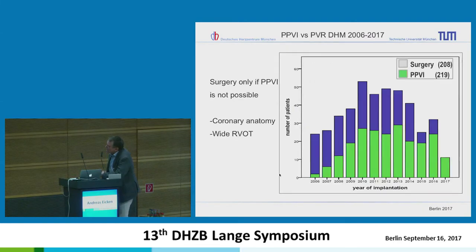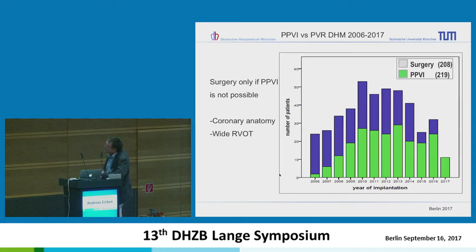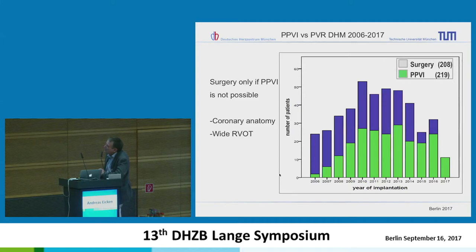Since we started our program in December 2006 with percutaneous valve implantation, we've looked at the same time at our surgical cases, which show more or less the same numbers. In later years we've been doing more interventional cases than surgical cases. We only do cases surgically now that can't be treated in the cath lab — usually patients with a wide right ventricular outflow tract or abnormal coronary anatomy.